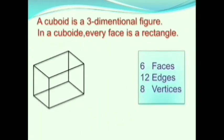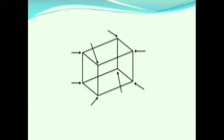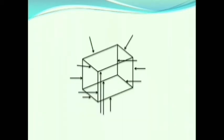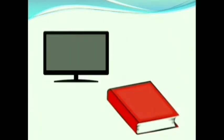A cuboid is a three-dimensional figure where every face is a rectangle. A cuboid has six faces, twelve edges, and eight vertices. The arrow marks in the picture show all the vertices and edges of the cuboid. Examples: your TV looks like a cuboid, and books are also cuboids.